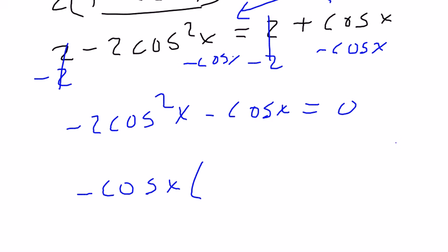This becomes... I'll have inside now, because I took the negative sign and one of these cosines out here, I'm going to be left with just 2 cosine. And it turns to a positive now. And then plus 1 equal to 0.